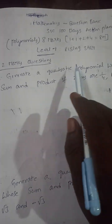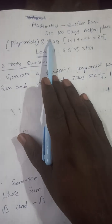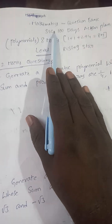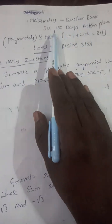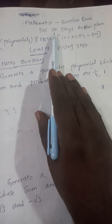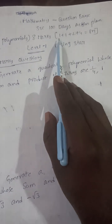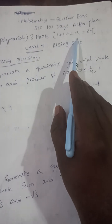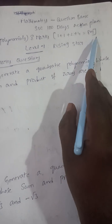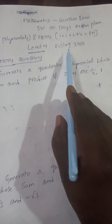Hi, welcome back to our YouTube channel. The topic is Mathematics Question Bank, SSC 100 Days Action Plan: Polynomials. Eight questions covering one mark, two marks, and four marks — totaling eight marks. Difficulty level: rising stars.